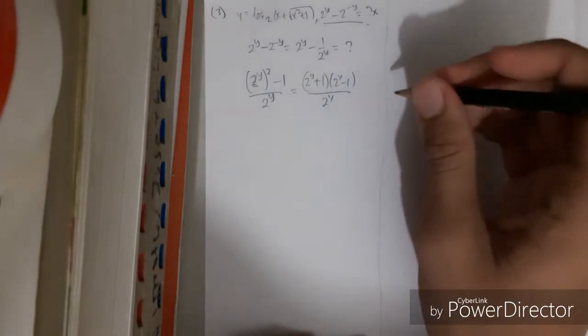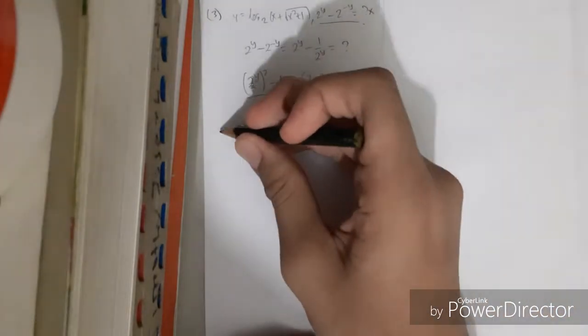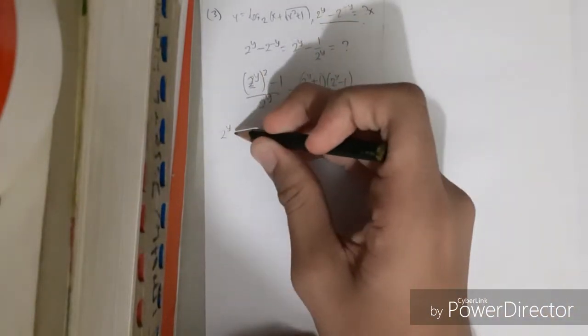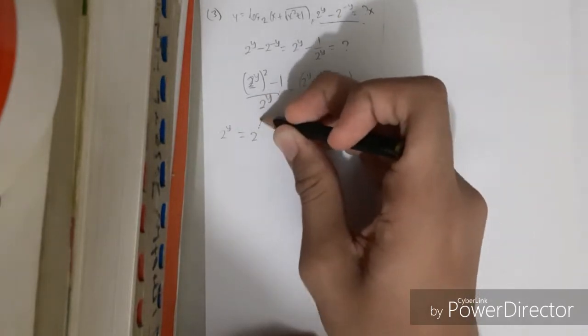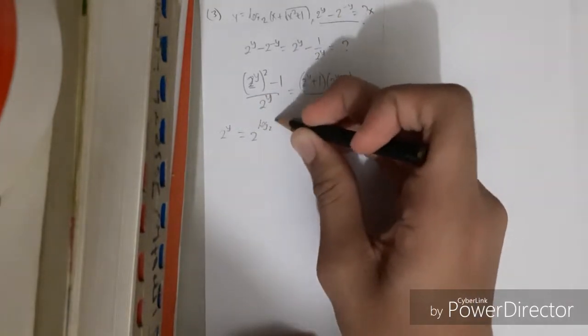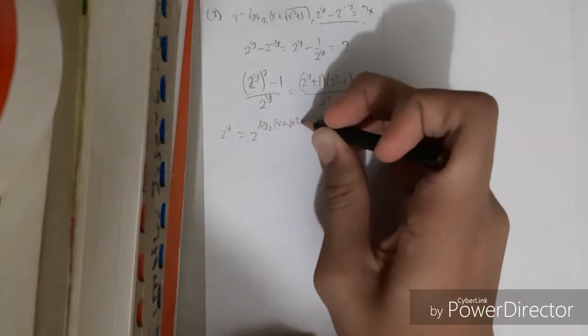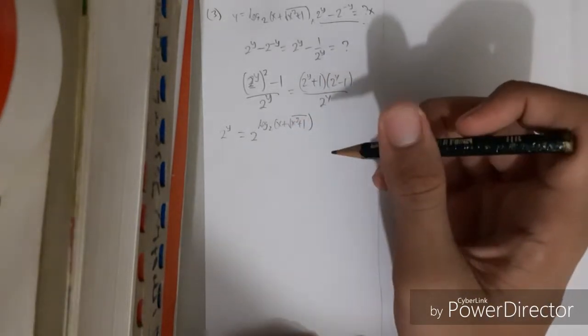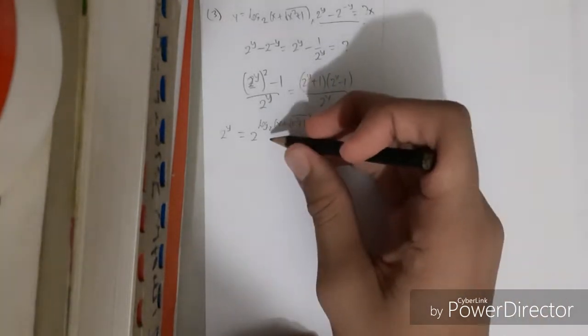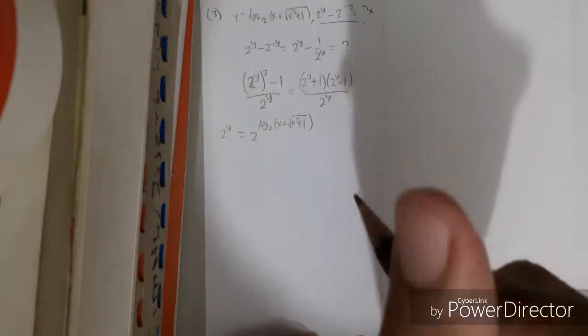Now we solve for 2 to the power of y. 2^y is 2 to the power of log base 2 of (x plus root of x squared plus 1). Remember the basic identity of logarithm.